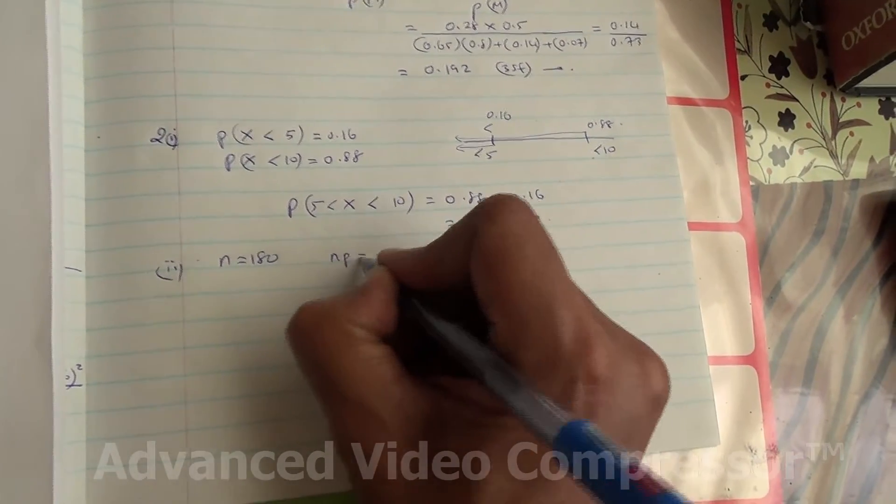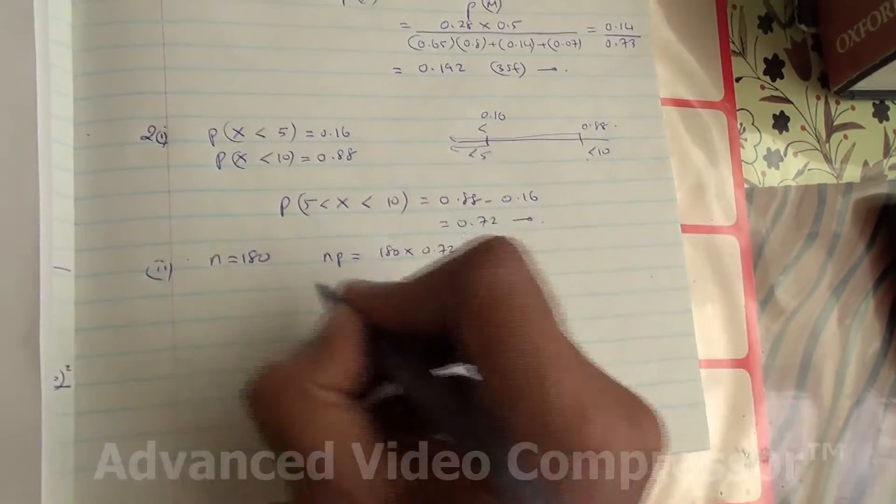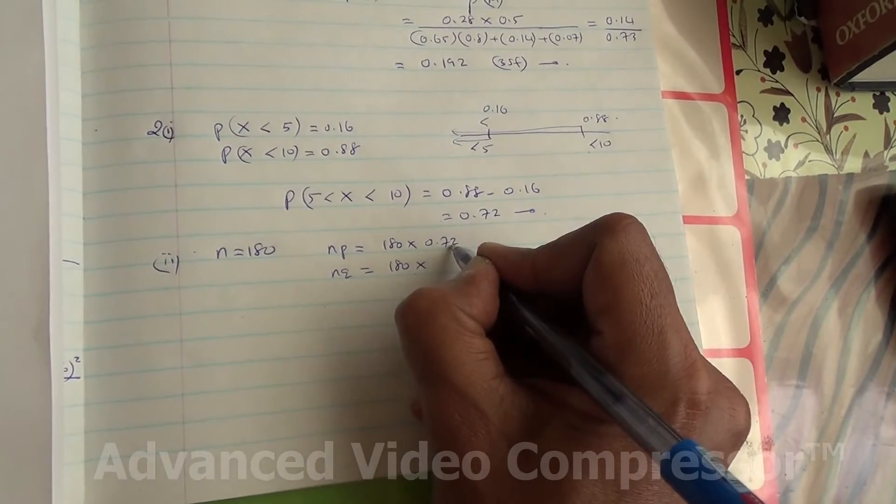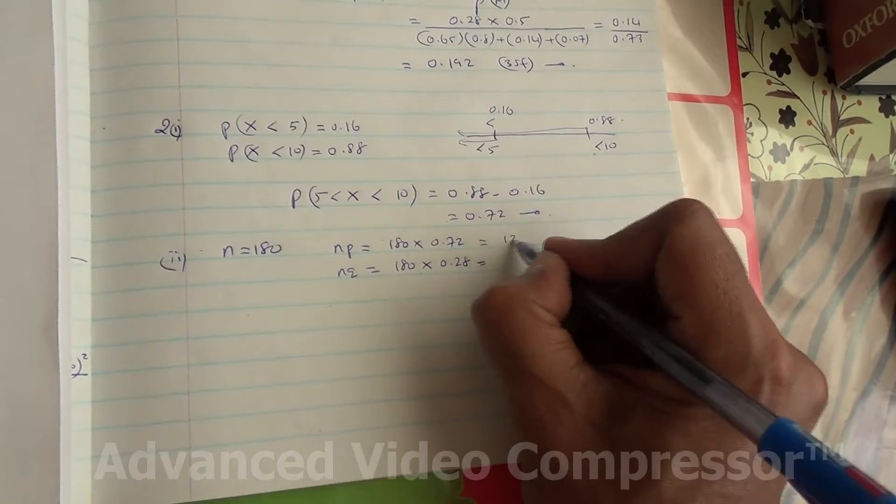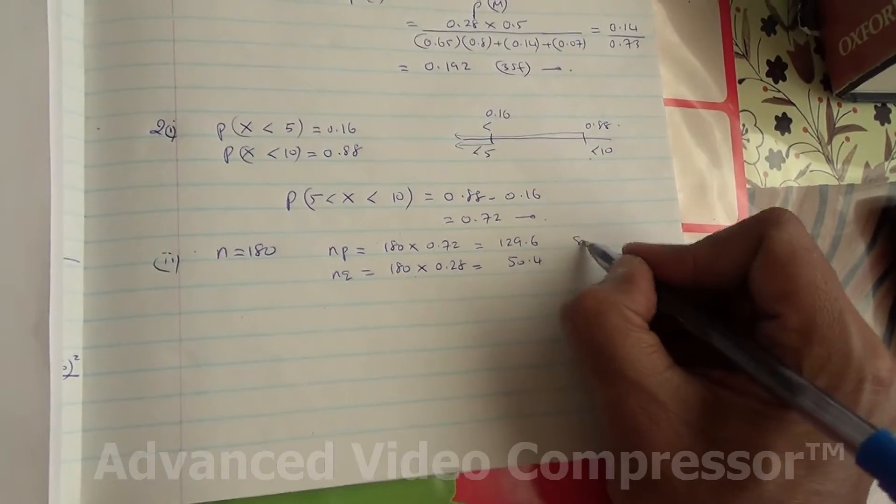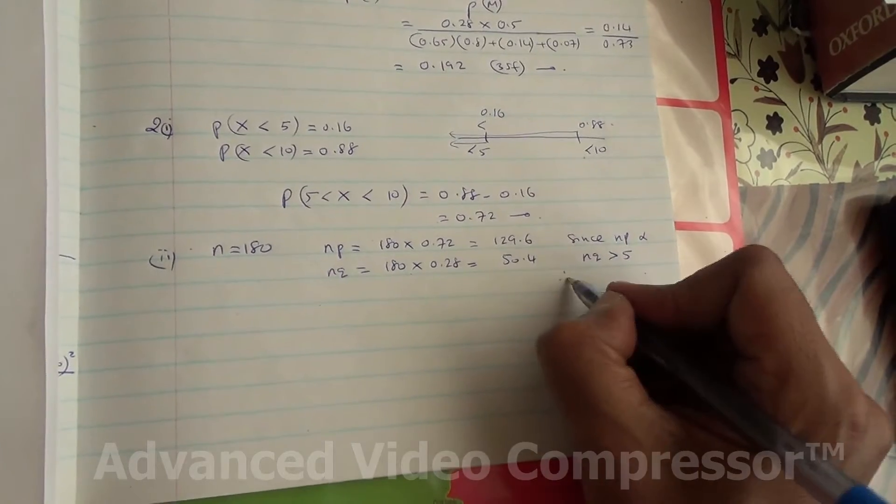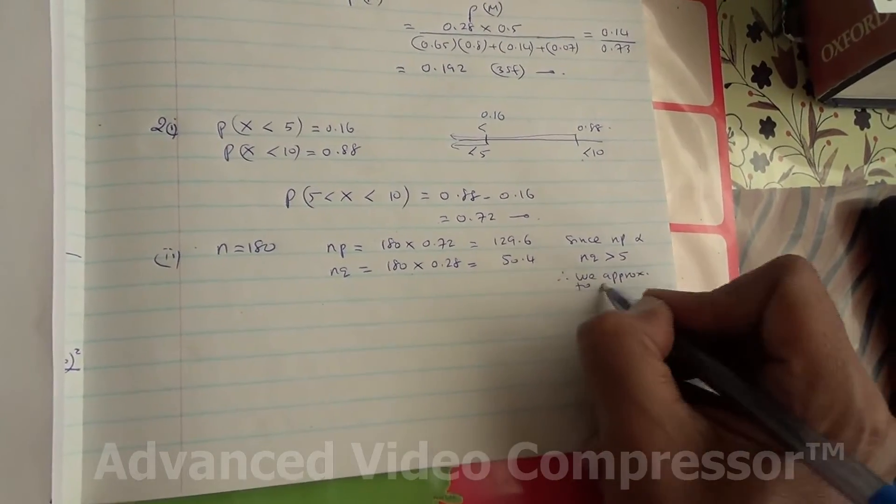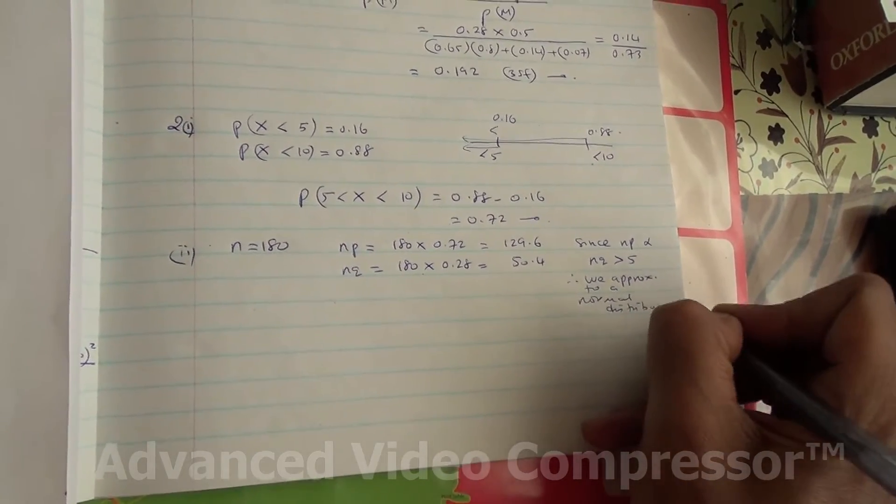What is NP? 180 times our probability of success is 0.72. Then NQ, 180 times 1 minus 0.72 is 0.28. If we do that, we're going to end up with 129.6 and 50.4. Since NP and NQ are both greater than 5, therefore, we approximate to a normal distribution.